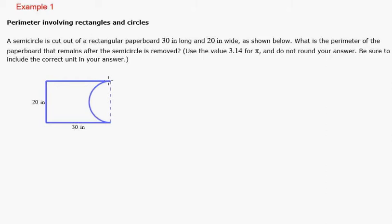So the perimeter of the whole thing would be this side. Let's call this side 1 and side 2 and side 3. We're going to add those up. So the perimeter would be side 1 plus side 2 plus side 3, and then plus...